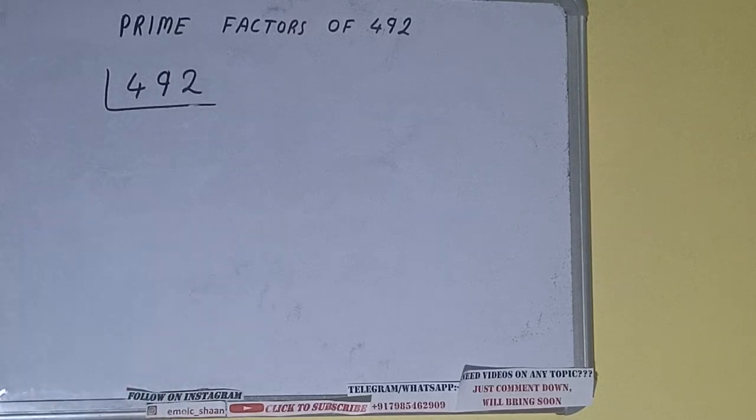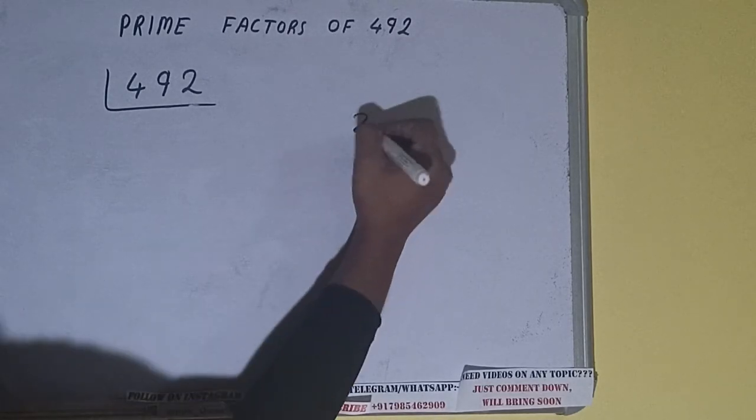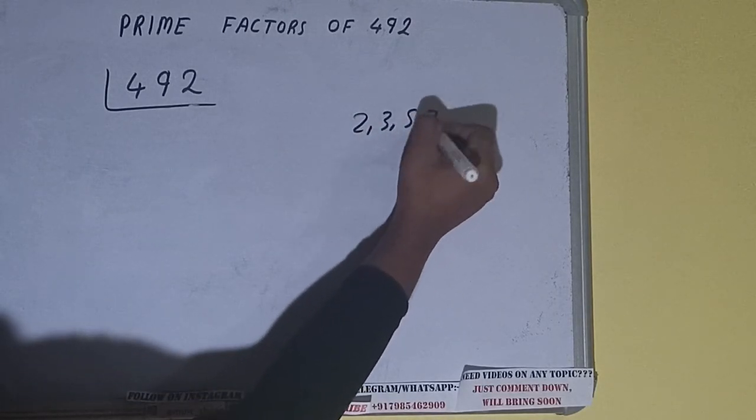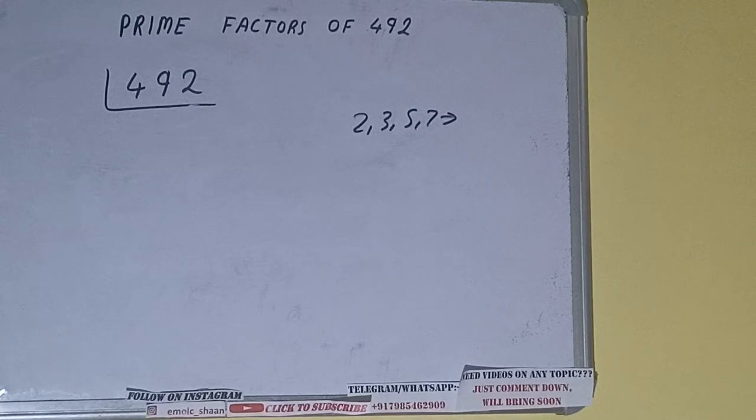The next thing we need to know about is what are prime numbers. So prime numbers are numbers that are divisible by 1 and the number itself, like 2, 3, 5, 7, and so on. Alright.